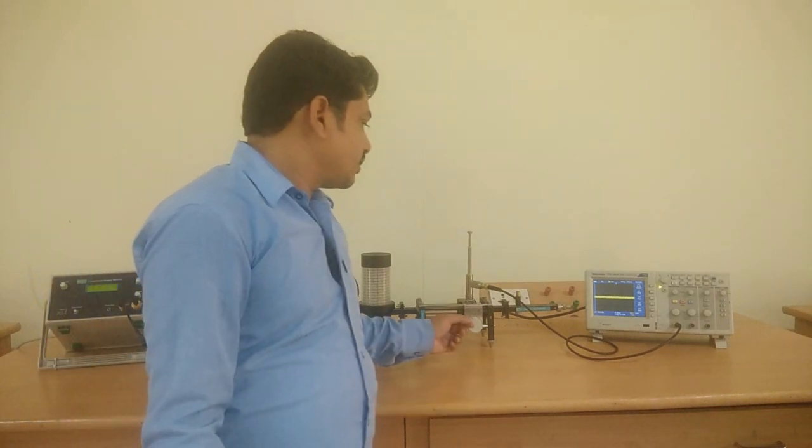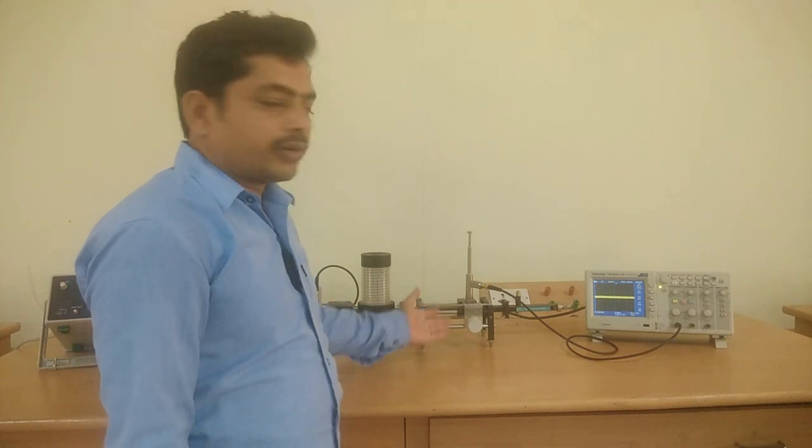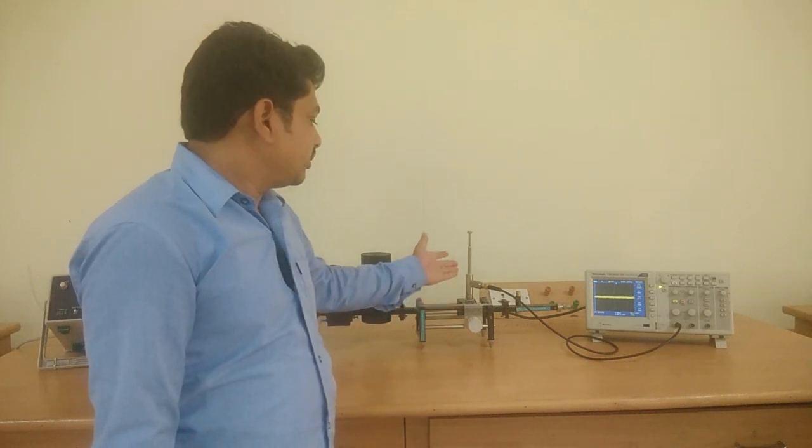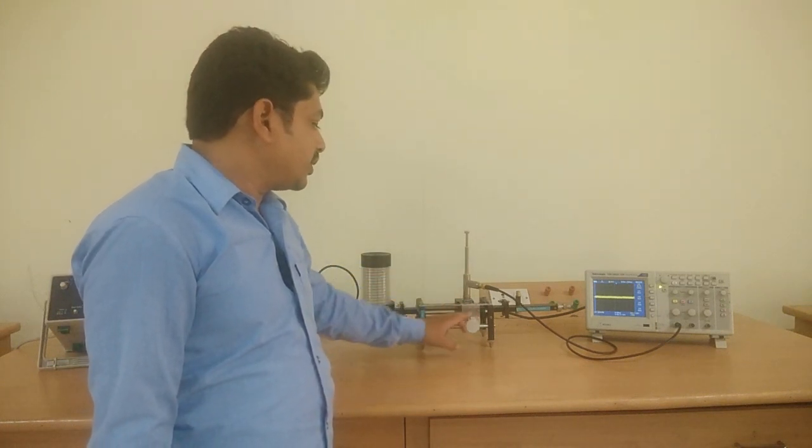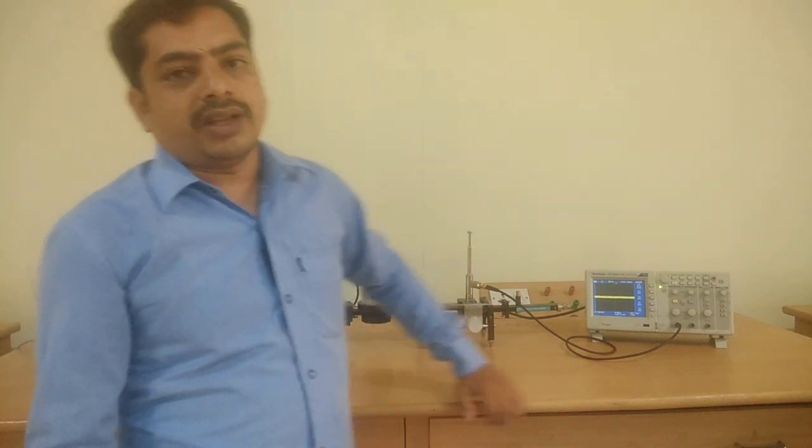What we did in Klystron, same we have to repeat here. By moving towards the left direction, we will get maximas and minimums. From there, successive maximums or successive minimums, we are going to take as d1 and d2 in centimeters.